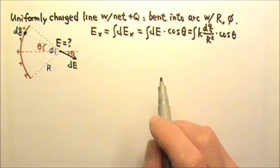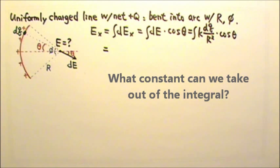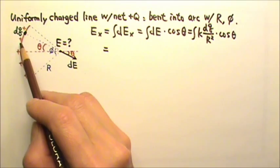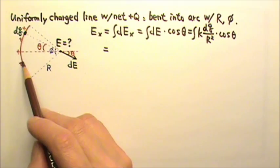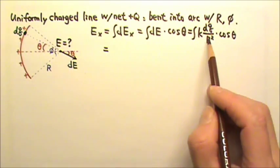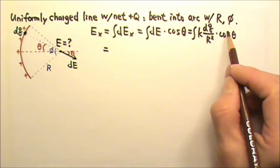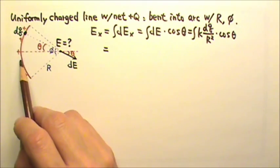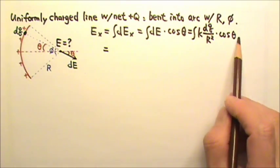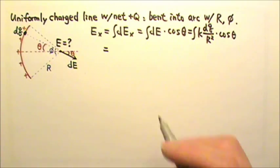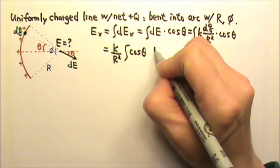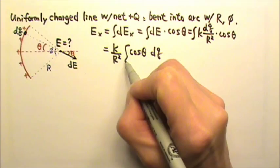Now, if anything is a constant we can take it out of the integral. k is always a constant we can take out. In this case, R is also a constant — because every dq on the arc has the same distance R to the center. But cosine theta — is that a constant? No, because a different dq gives a different angle theta. So theta is a variable; we cannot take cosine theta out. We take out k and R squared, leaving the integral of cosine theta times dq.